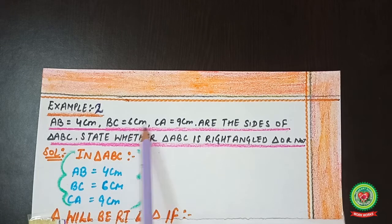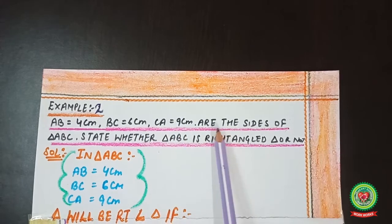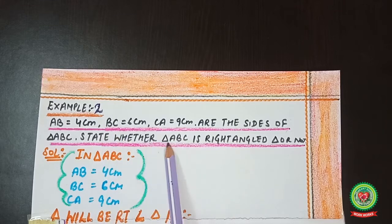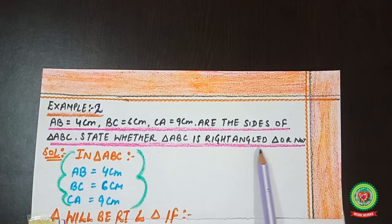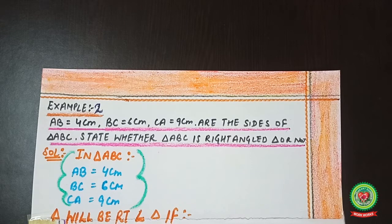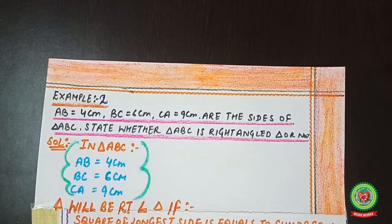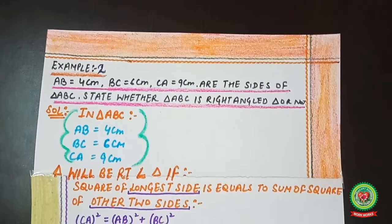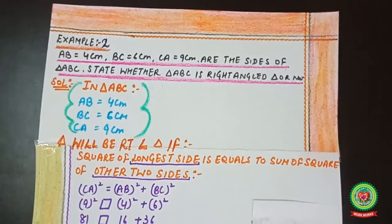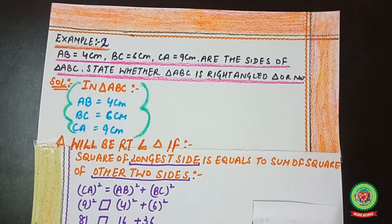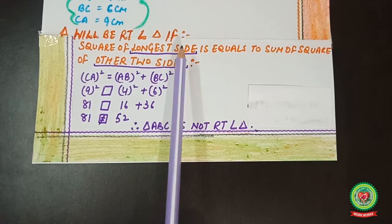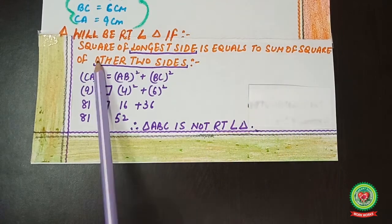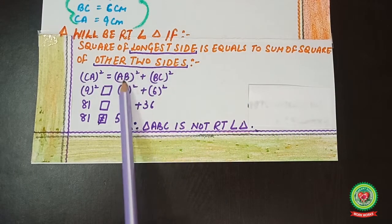Example two: AB = 4 cm, BC = 6 cm, and CA = 9 cm are the sides of triangle ABC. Again, we need to determine whether triangle ABC is a right angle triangle or not. We apply the same property: the triangle will be a right angle triangle if the square of the longest side equals the sum of the squares of the other two sides.